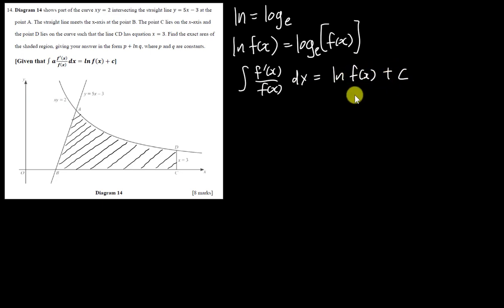This is a sort of formula to help you solve later. Here you have 2 over x - you need to integrate 2 over x, and you'll get ln x. I'll explain later. Let's start by doing this question. They ask us to find the exact area of the shaded region. I need to find the intersection point.